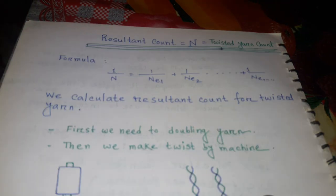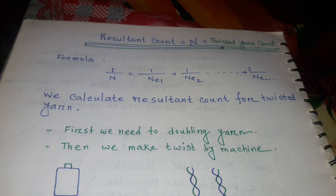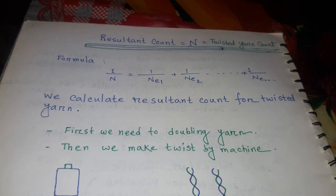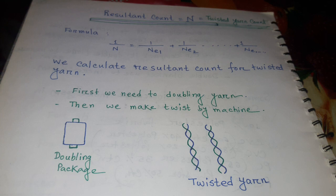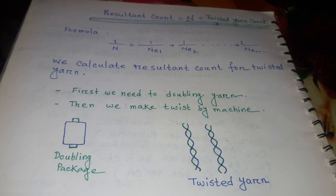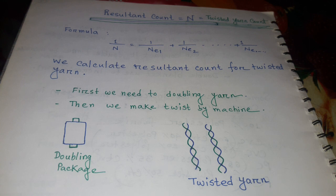Assalamualaikum, hello viewers. Today I'm going to discuss resultant count of yarn. Resultant count means twisted yarn count.